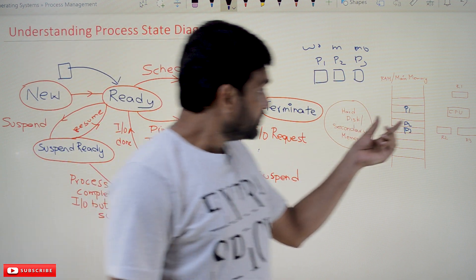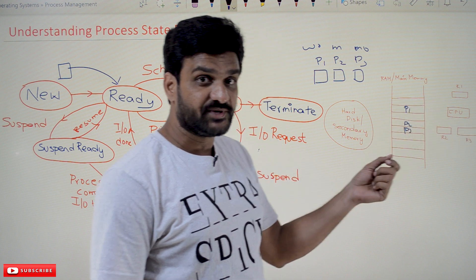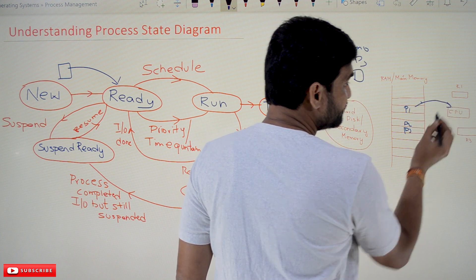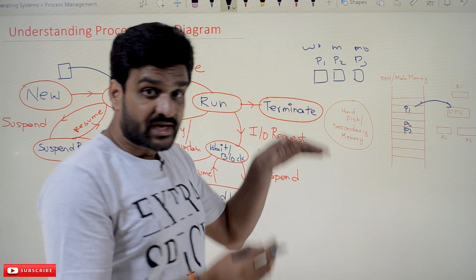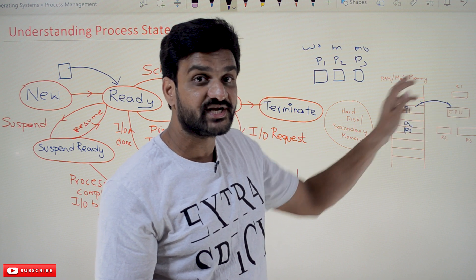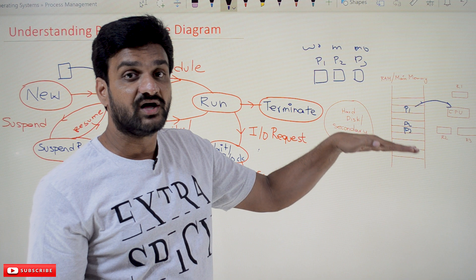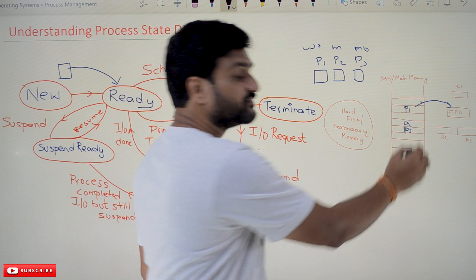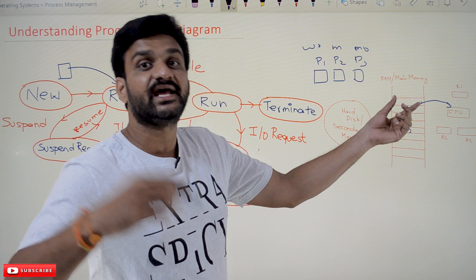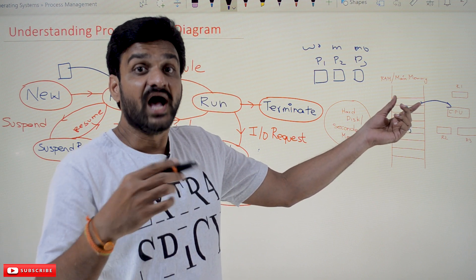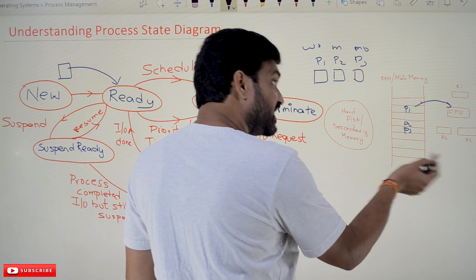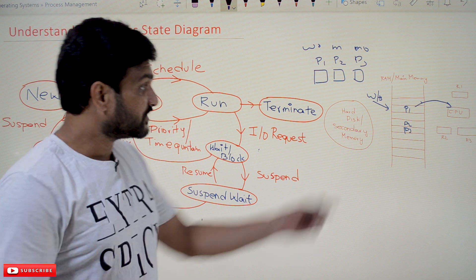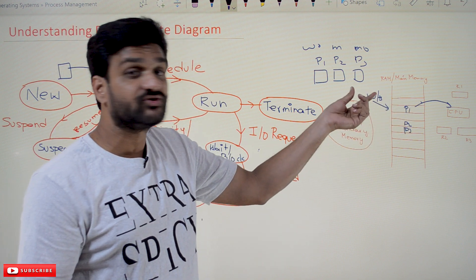Once they are on the RAM, the processes will get executed on the CPU. For example, if process P1 is getting executed, the CPU requests the instructions of P1, and instruction by instruction they get shifted onto the CPU. If all the instructions of P1 are executed, it will be terminated and removed from the main memory. If P1 requests an IO operation, P1 will remain in the RAM but get shifted from the ready queue to the wait or block queue.